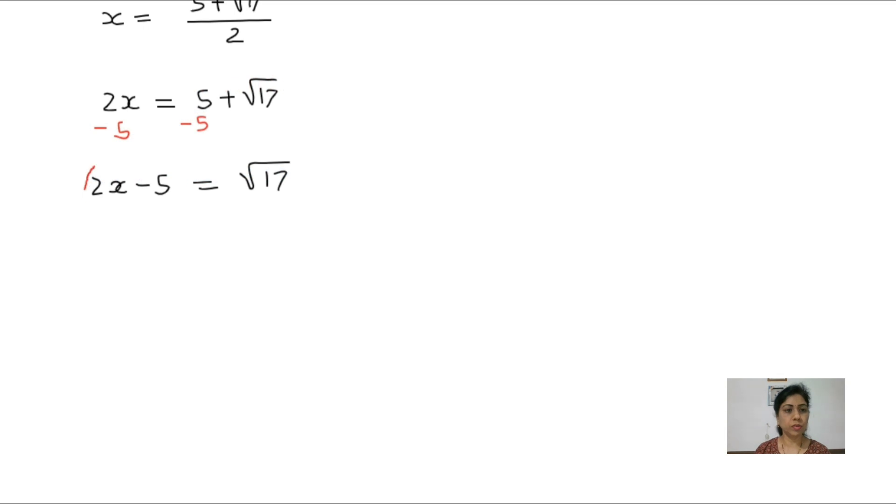Now we want to take square both sides because we want to remove this radical square root. Here we can apply algebraic identity a minus b whole square. A value here 2x, b value 5. So a square minus 2ab here 5 plus b square, it means 5 square. And square root and square cancel, just 17.